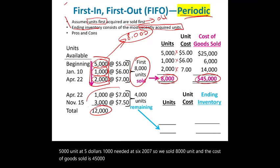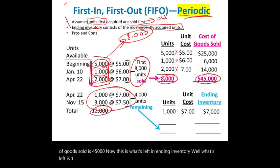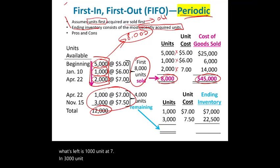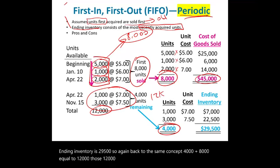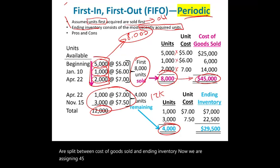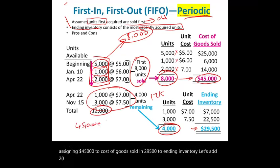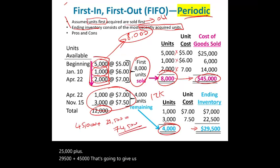Ending inventory: 1,000 units at $7 + 3,000 units at $7.50 = $29,500. So $45,000 cost of goods sold plus $29,500 ending inventory equals $74,500 — that magic number again. The $74,500 goods available for sale is split between cost of goods sold and ending inventory. This is periodic FIFO — we simply wait until end of year and remove the oldest 8,000 units.